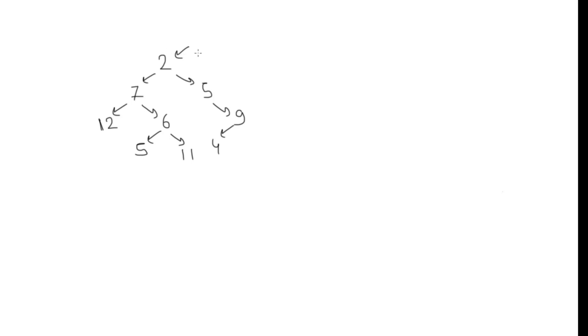For example, if we want to find 11: first it checks the root node — doesn't match. It goes left — doesn't match. Goes left again — doesn't match. Next is null, so it won't go further. It goes right — doesn't match. Goes left — doesn't match. Goes right — it matches 11, so it returns 11.